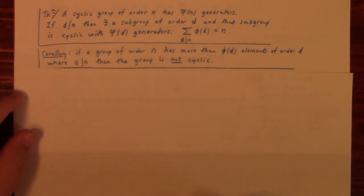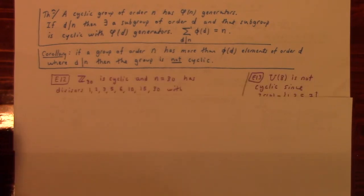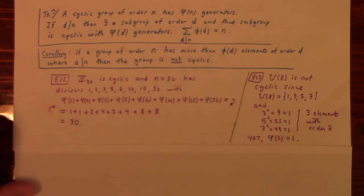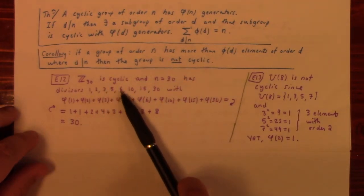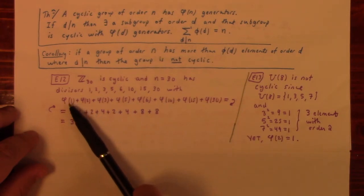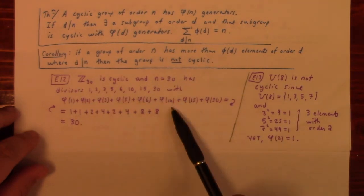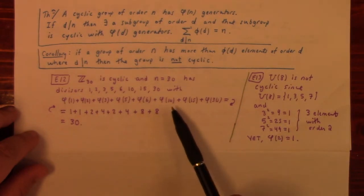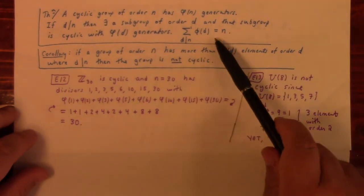Corollary: if a group of order N has more than φ(d) elements of order d, where d divides the order of the group, then the group is not cyclic. For example, Z_30 has divisors 1, 2, 3, 5, 6, 10, 15, 30, and the Euler phi values are 1, 1, 2, 4, 2, 4, 8, 8 respectively, which sum to 30. That confirms the identity.